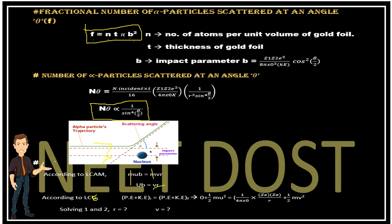Then applying the law of conservation of energy: initial potential energy is zero, initial kinetic energy is (1/2)mu², final potential energy is (1/4πε₀)(Ze²/r), and final kinetic energy is (1/2)mv². By solving these two equations together, we get v and r. This is theory for understanding; numerical questions may be solved based on this.